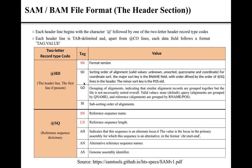The GO tag in the HD line represents the grouping of the alignment — it indicates if similar alignment records are grouped together. The valid values for the GO tag can be 'none', meaning no grouping has been performed; 'query', meaning alignments are grouped by the query name; or 'reference', meaning the alignments are grouped by the reference name.